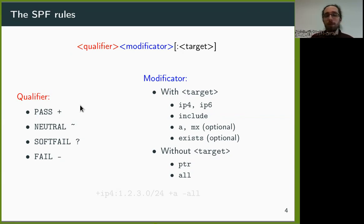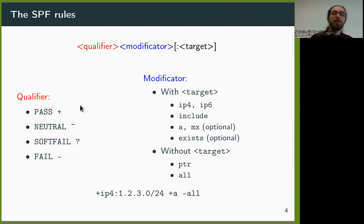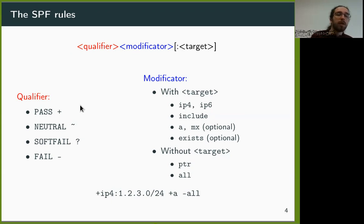Each rule has the following structure: first, a qualifier telling the server what to do if the mail matches the rest of the rule; then the modifier and the target describe where to find the whitelisted IPs. For example, this rule tells that the mail is valid if the source IP is in the 123.0.0.0/24 network, or if there is an A record of the source domain that points to the source IP, and all other IPs are invalid.